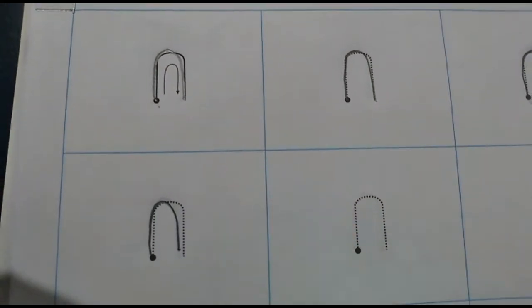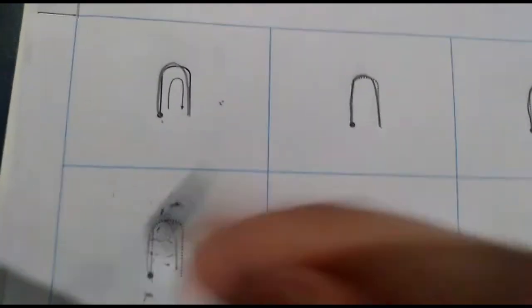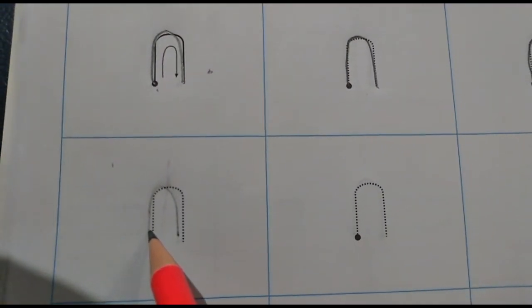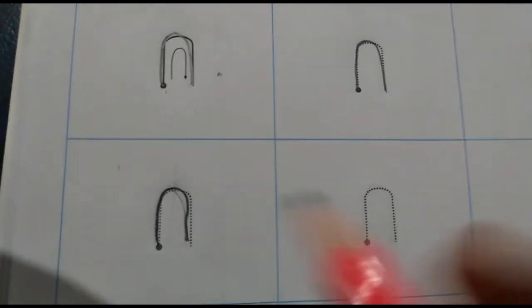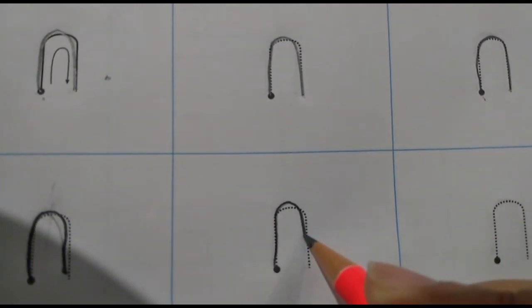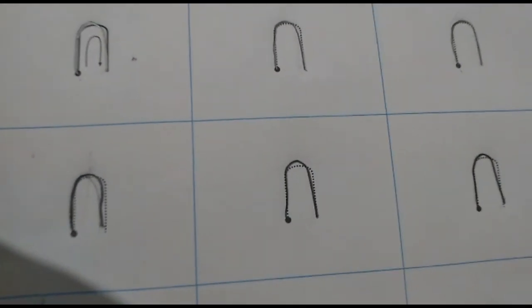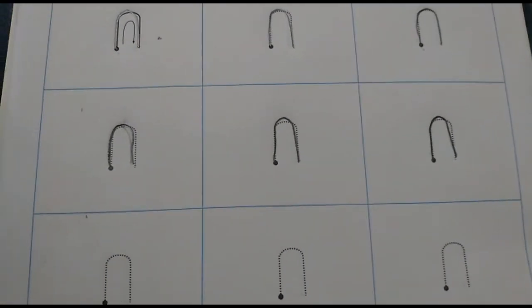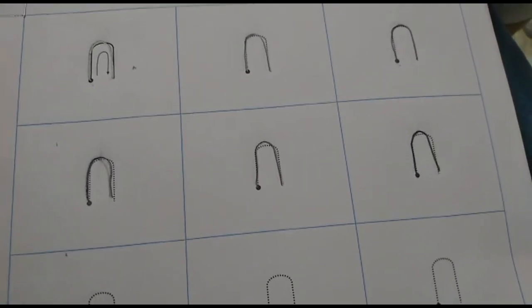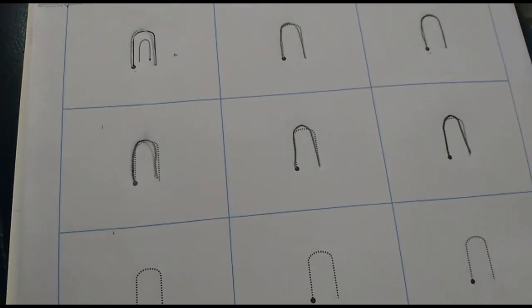One second children. So we start from the dark dot, we'll go up, bumpety, and come down. Again start from the dark dot, go up, bumpety, come down. Start from the dark dot, go up, bumpety, and come down. This is how we are going to complete page number 13 and also page number 14. We are going to complete this n pattern on page number 13 and page number 14.